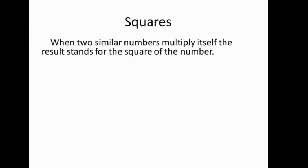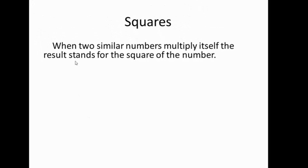Now moving on to the actual topic, but before moving on we need to talk about squares first. When two similar numbers multiply itself, the result stands for the square of the number. It means any two numbers multiply themselves, that becomes the square of the number. Let's have some examples.